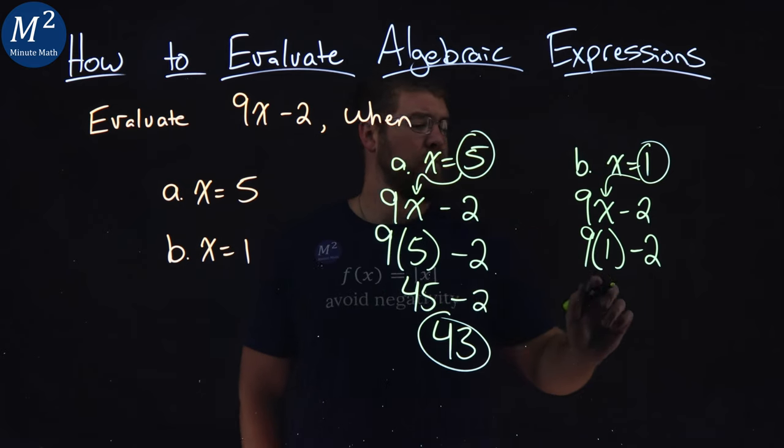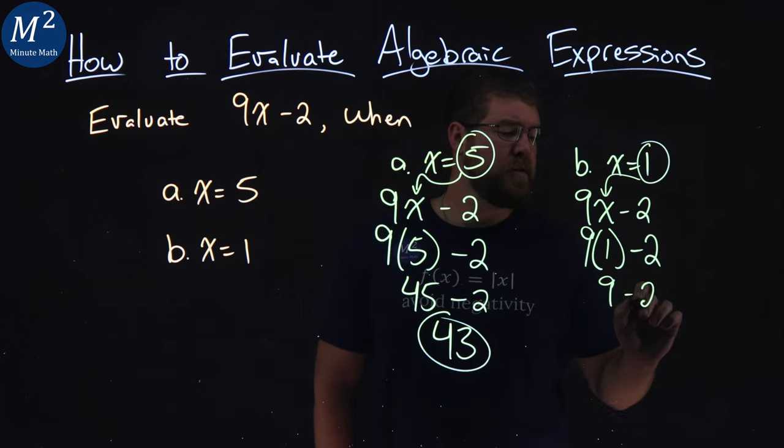Order of operations, again, tell us 9 times 1 is a 9, minus the 2, and 9 minus 2 is a 7.